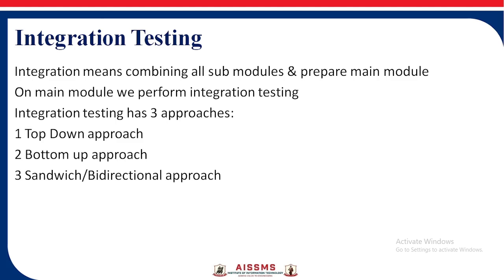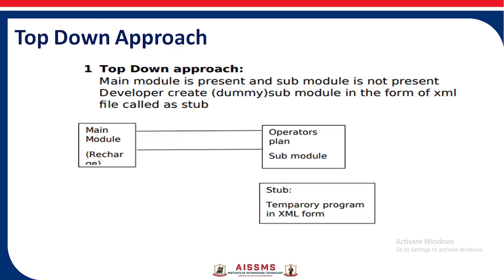Now, whenever the integration process ends, the testing starts. This is called the testing approaches. The first approach is the top-down approach, the second is the bottom-up approach, and the third is the sandwich or bi-directional approach. In the top-down approach, if we have developed a module but don't have the next module to check the correctness of the new module, then we use a dummy module. The dummy module is created from the stub — a dummy program created by the developer. The stub is in XML format.